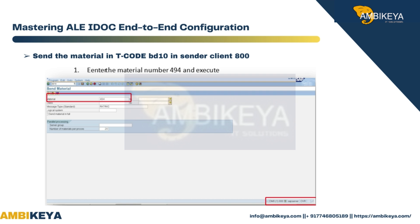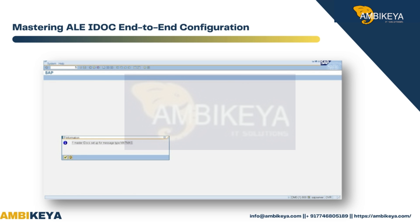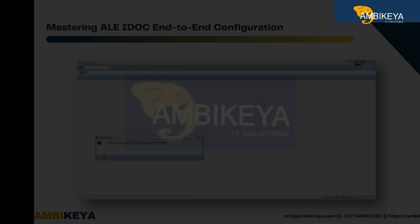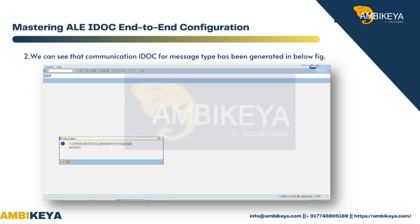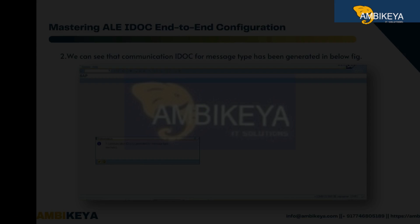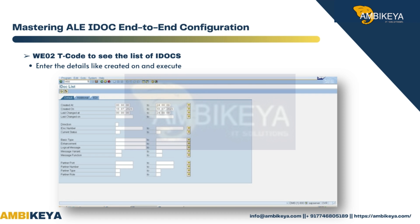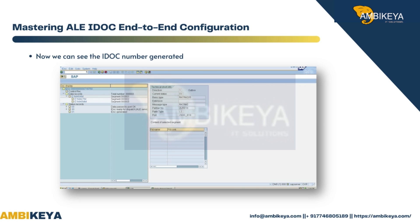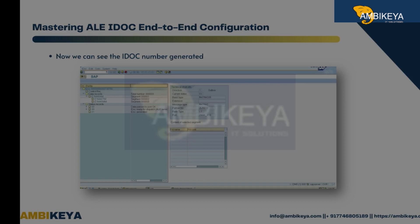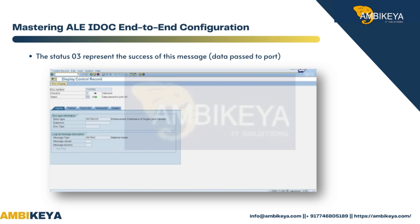Send the material using T-code BD10 in sender client 800. We can see that a communication IDOC for the message type has been generated. Use T-code WE02 to see the list of IDOCs — enter details like creation date and execute. The IDOC number is now visible, and status 03 represents the success of this message: data passed to port.